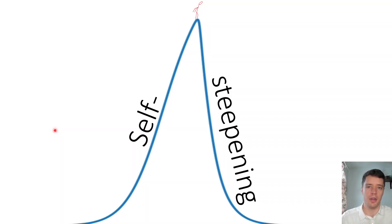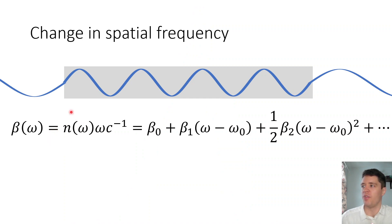Welcome to this video on self-steepening in non-linear fiber optics. In a previous video, which should be linked right up here, I explained how the spatial frequency beta of light propagating through a medium depends on the temporal frequency of that light.